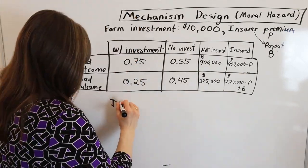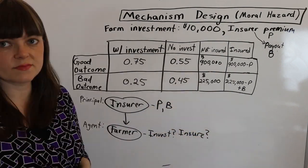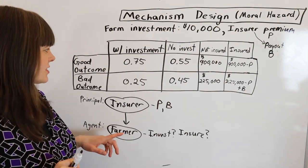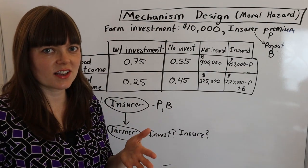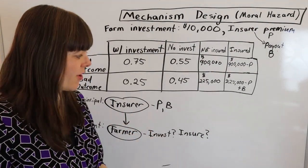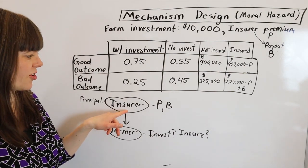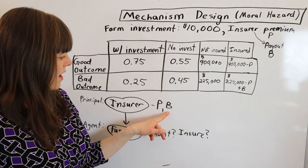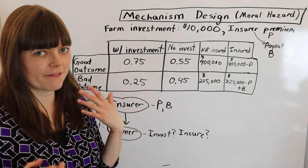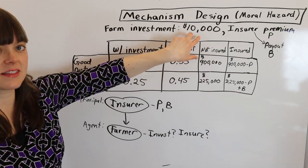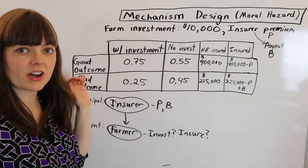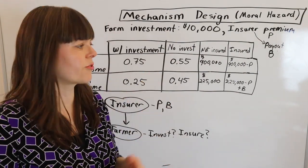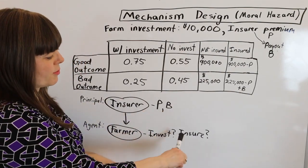We want to start by thinking about who is the principal, who is the agent, and what are the choice variables of each player. The insurer is trying to influence the farmer — specifically, the insurer wants to make sure the farmer invests in the technology, because if they don't invest, that drives up insurance prices for everyone. So the principal is the insurer, who determines the price of insurance P and the payout B for a bad outcome. The farmer, the agent, chooses whether to invest in the $10,000 technology and whether to purchase insurance.